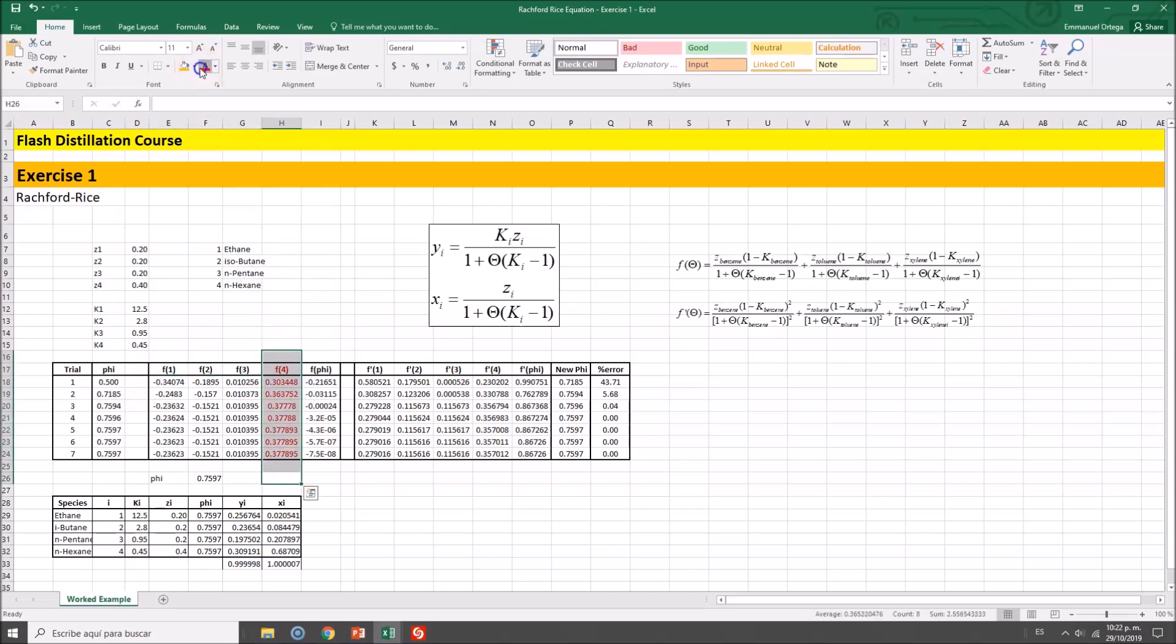So, the only difference will be this and this part right here. I added those columns because I have four species. In the worked example, we had only three species. And, well, let's get it started. We have f1, 2, 3, and 4. Total addition of these guys will be minus 0.21. I got f1, 2, 3, and 4 of the derivative. Total addition of these guys. And we calculate the new phi value.